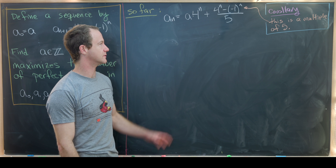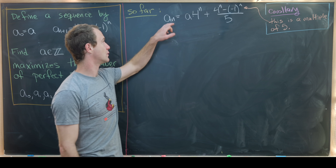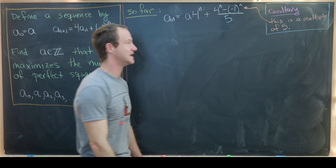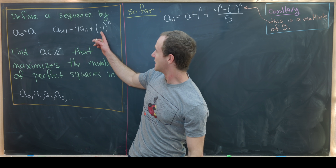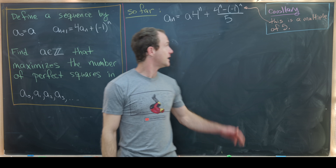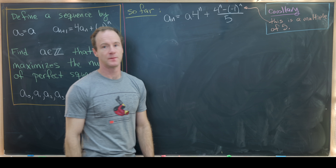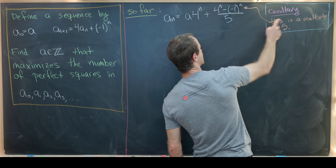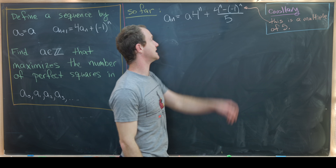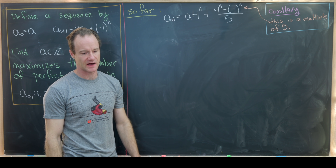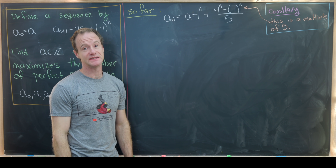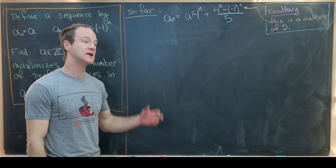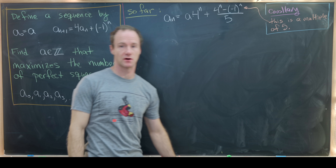The closed form can be rewritten as a_n = a · 4^n + [4^n - (-1)^n]/5. Since all terms of the sequence are integers (the recursion produces integers), this tells us that 4^n - (-1)^n is always a multiple of 5 — a nice corollary that jumps out from these calculations.